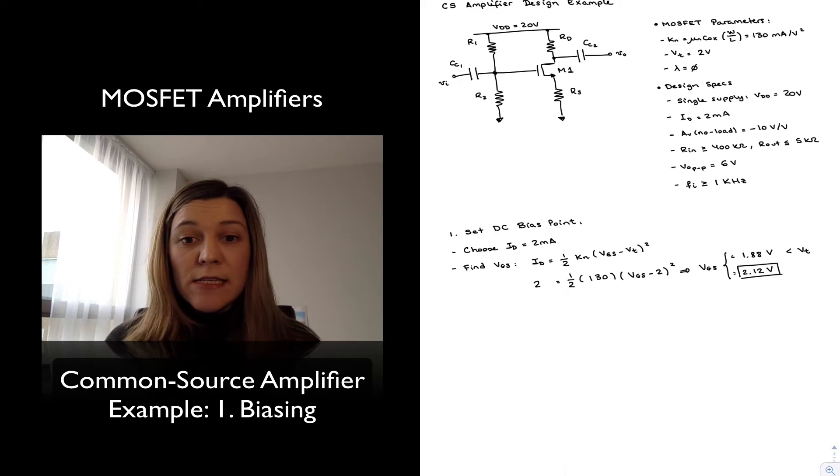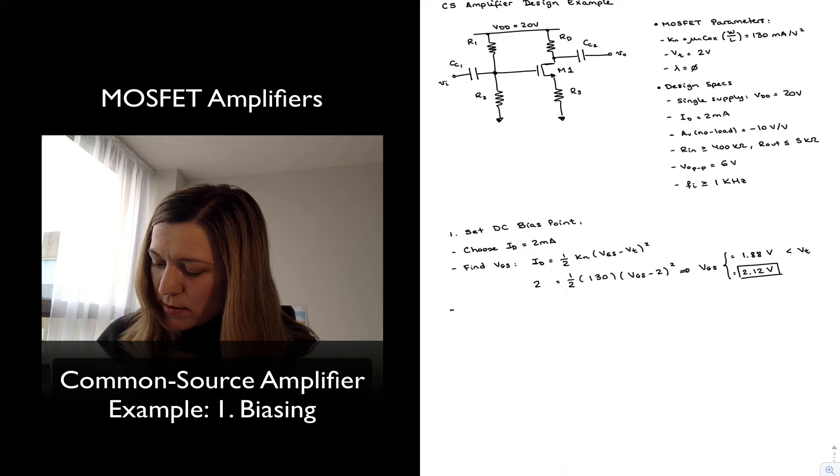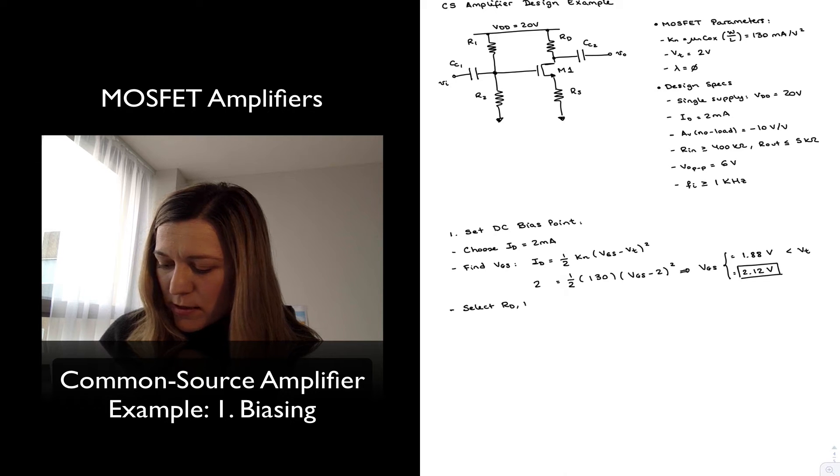For which my VDS needs to be greater than VGS minus Vt, or the overdrive voltage. I'm going to do the next step: select RD and RS.